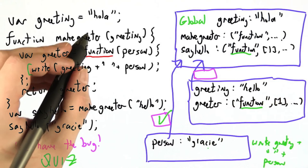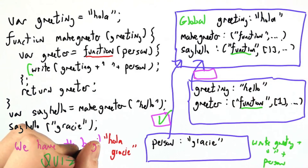With the bug, this program will mistakenly print out hola Gracie. That's not what we wanted, that doesn't match the semantics.